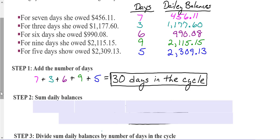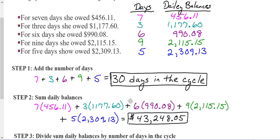I could take and sum $456.11 seven times and then add three $1,177.60, but that would be a lot of adding. And an easier way to do that would be to take the number of days times the balance you had for each of those days. So for example, the first one would be seven days times $456.11. The second one would be three days times $1,177.60. And you would add each of those that you multiplied until you get to the sum daily balance for Rebecca of $43,248.05.